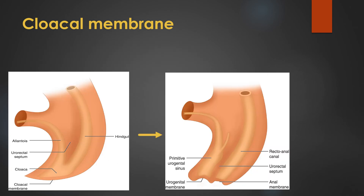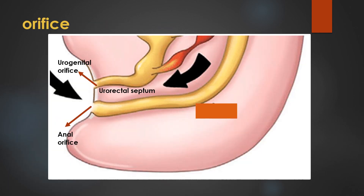Here we can see the cloacal part and the cloacal membrane. These two are separated by means of the urorectal septum, and it forms two membranes — the cloacal membrane is subdivided into two membranes. The anterior one is the urogenital membrane and the dorsal or posterior one is called the anal membrane. At the end of the fifth week, the membrane ruptures and forms two orifices: towards the anterior, that is the urogenital orifice, and towards the posterior or dorsal part becomes the anal orifice. These two are separated by the urorectal septum.